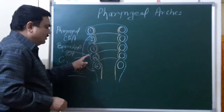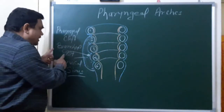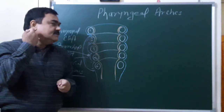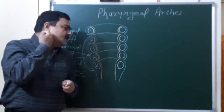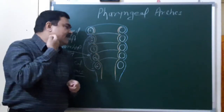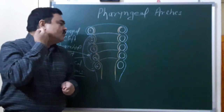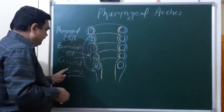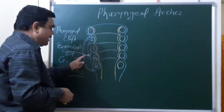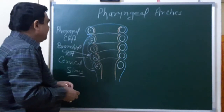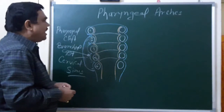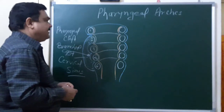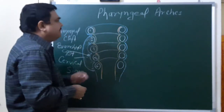The position of the branchial cyst or branchial sinus lies just anterior to the sternocleidomastoid muscle. This concludes the discussion about the pharyngeal clefts.